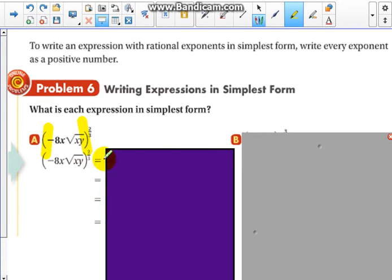Okay, so the first thing we're going to do is look at what's given to us: negative 8x times radical xy all to the two-thirds power. Okay, so our first step is just to rewrite that and now let's start working on it. What they've done here is they've taken the two-thirds and they're going to distribute it basically to every term: the negative 8, the x, and the radical xy.